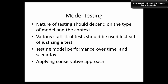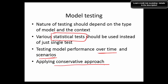What are the guidelines related to model testing? The nature of testing depends on the type of model and context. Multiple statistical tests should be used rather than a single test for the same purpose. Model performance should be tested over time and across scenarios — including out-of-time and out-of-sample validation. A conservative approach should also be applied.